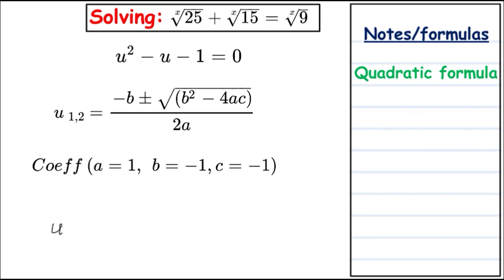So u1 and u2 equals minus b, which is 1, plus or minus the square root of minus 1 squared minus 4 by 1 by negative 1, that's a 5, all over 2 by 1. You can see that this is the golden ratio.